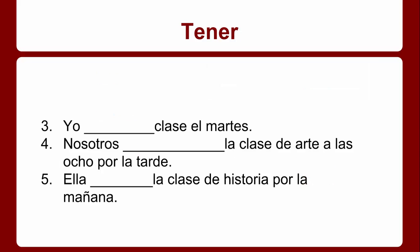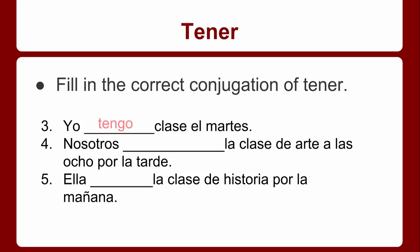Let's practice using the verb tener. Fill out numbers three, four, and five on your note guide as I talk about how we conjugate. In Spanish, if I wanted to say 'I have class on Tuesday,' I would say yo tengo clase el martes. 'We have art class at 8 in the afternoon' — nosotros tenemos la clase de arte a las 8 por la tarde. And 'she has history class in the morning' — ella tiene la clase de historia por la mañana. As you can see, my subject and my verb agree: yo tengo, nosotros tenemos, ella tiene.